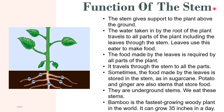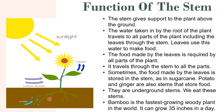Now we will discuss the function of the stem. The stem gives support to the plant above the ground. The water taken in by the roots travels through the stem to all parts of the plant including the leaves. Leaves use this water to make food. The food made by the leaves is required by all parts of the plant and travels through the stem to all parts.